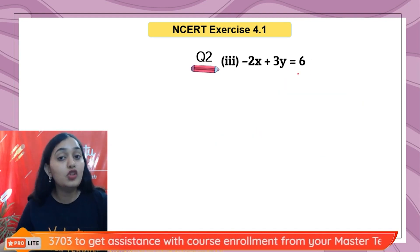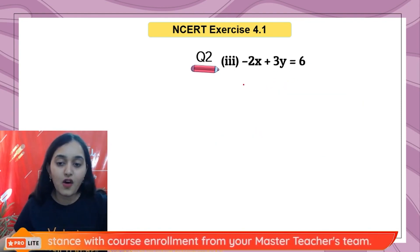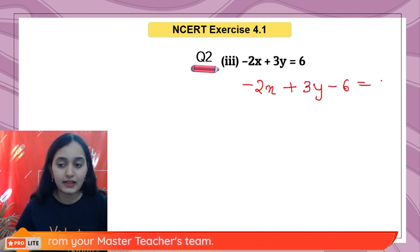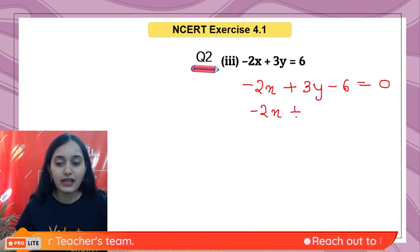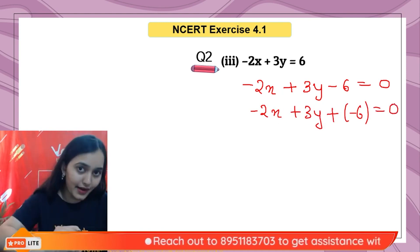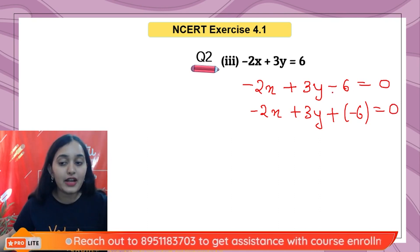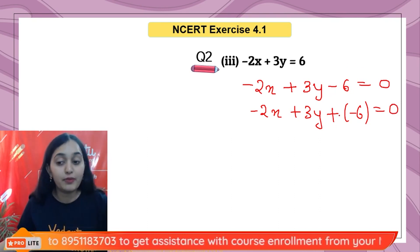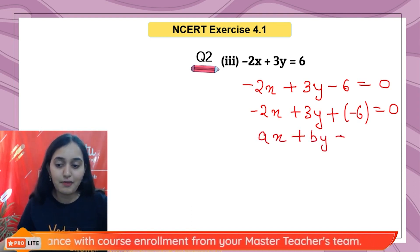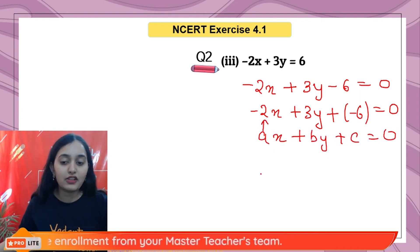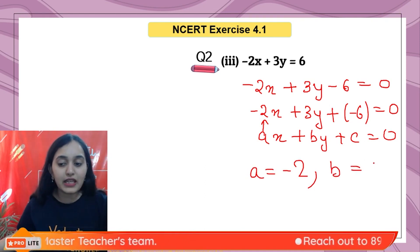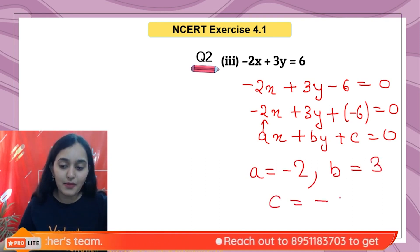The third equation is not in standard form. Converting it: −2X + 3Y − 6 = 0, which can be written as −2X + 3Y + (−6) = 0. Always write it in standard form using 'plus of minus' notation. Equating with AX + BY + C = 0: A = −2, B = 3, and C = −6.